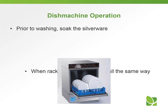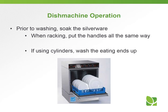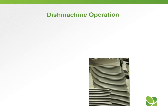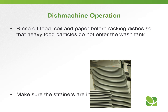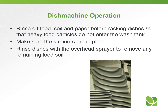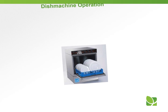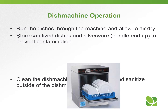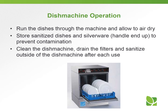Prior to washing, soak the silverware. When racking, put the handles all the same way using cylinders, and wash with the eating ends up. Place glasses, cups, and bowls in racks made for them. Rinse off food soil, paper, and garbage before racking so heavy food particles do not enter the wash tank. Make sure the strainers are in place. Rinse dishes with the overhead sprayer, run them through the machine, and allow them to air dry — do not use a towel. Store sanitized dishes and silverware handle-up to prevent contamination. Clean the dish machine, drain the filters, and sanitize the outside after each use.